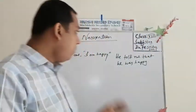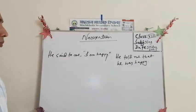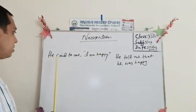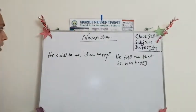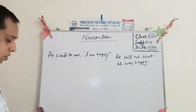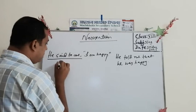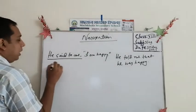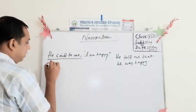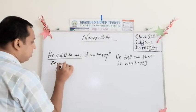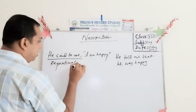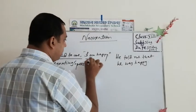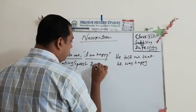Now it is very important. Look at the sentence very carefully. Read the first sentence — 'He said to me.' This part is called reporting speech. On the other hand, the part within the quotation marks is called reported speech.